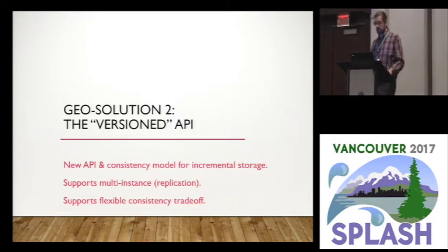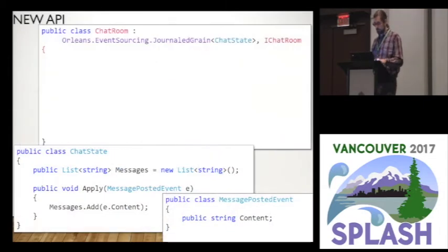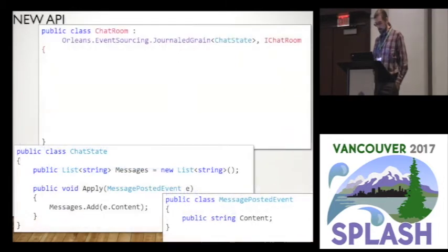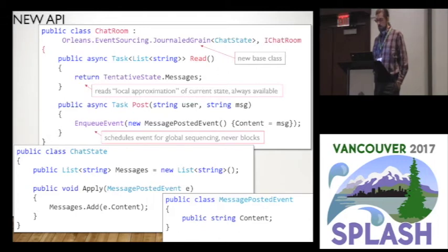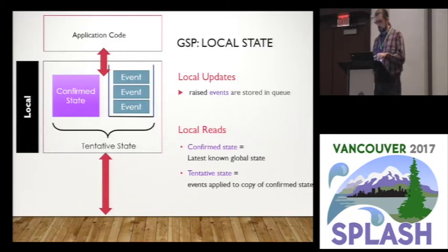The other API we have is a versioned API, where you can read and write locally. The key distinction in this API is that messages have a different state interface where I separate the event of what happened from how it modifies state. I track messages as events called 'MessagePostedEvent' and have code that applies it to the state. In the implementation, when I post a message, instead of applying it directly I enqueue an event representing that message. When I read, I can read a tentative state — a background consistency model continuously writes these queues to the master copy.